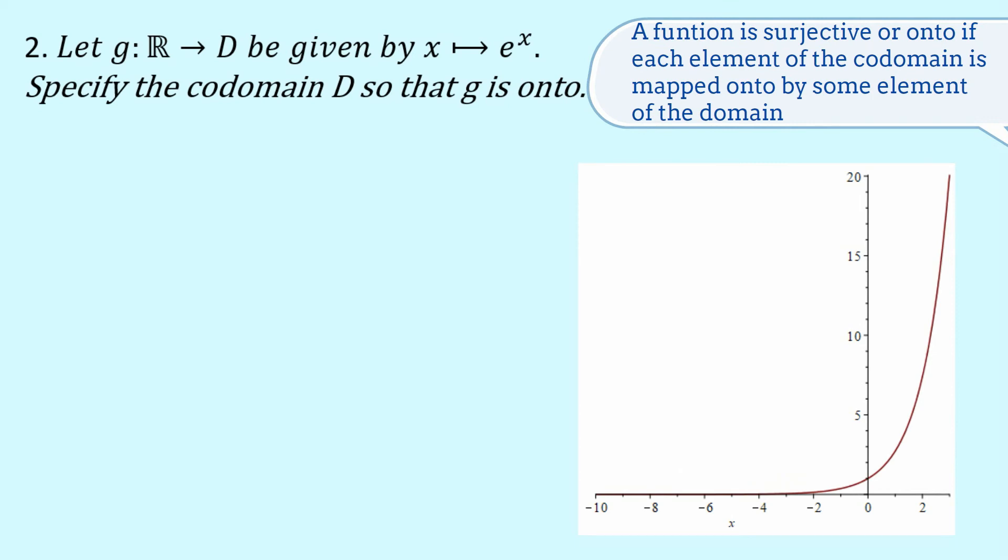So if you look at the graph, you can see that it goes down very close to zero. It looks like it goes to zero, but actually just gets closer and closer to zero as x becomes more and more negative.